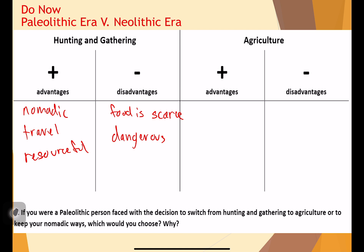Now let's take a look at farming. We said food was scarce for hunter-gatherers — well, food is not scarce in farming. You're growing your food in your backyard instead of going out to hunt, so you have a constant source of food. With food being in excess — meaning abundant — you can do more things. More food, less worries. When you have more food, you don't have to worry about finding a meal that day. You can now pursue more activities, hobbies, and interests you never were able to do before.